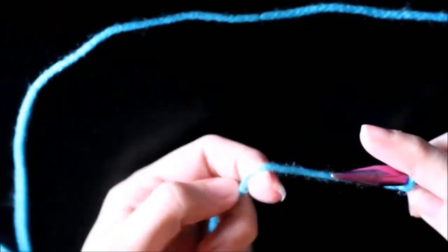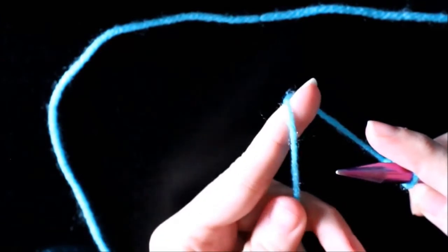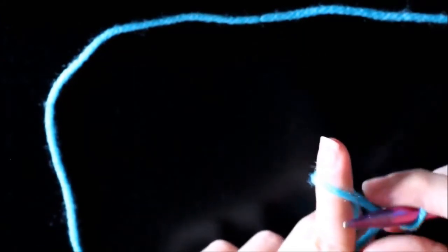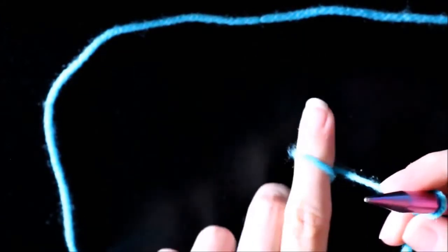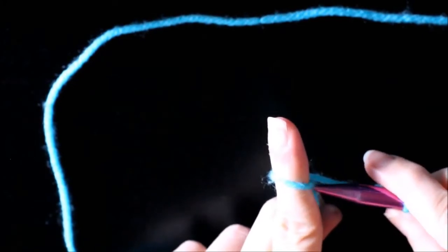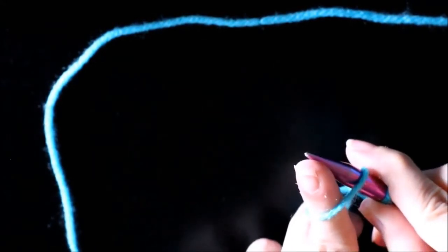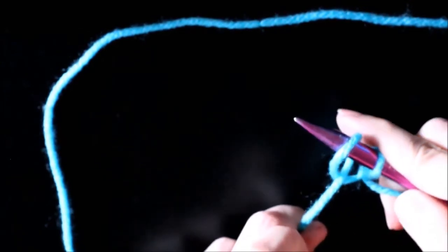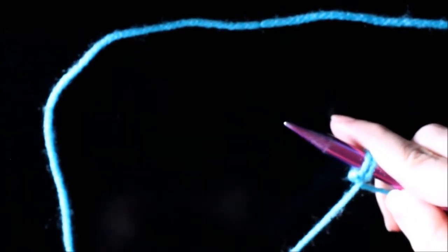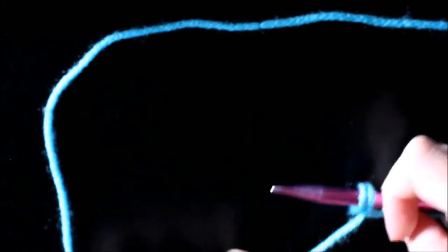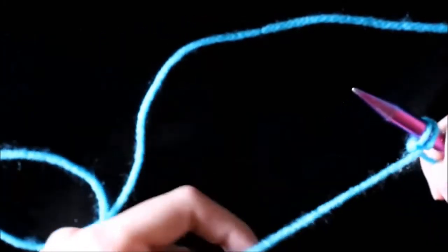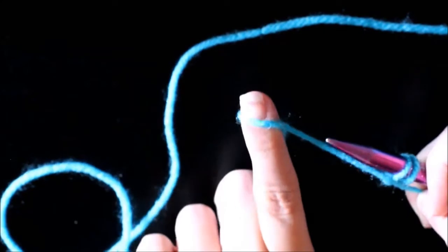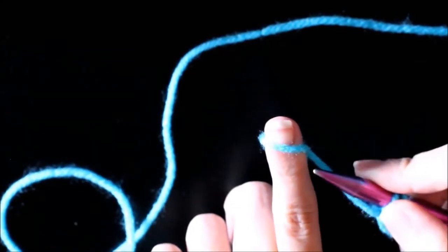I'm going to do it really slow so you can see. Wrap the yarn around your finger, making a whole turn. And now you will insert your needle. Take your finger off, and slightly pull the yarn to create the stitch. Don't pull it too hard, you don't want the stitches to be too hard.